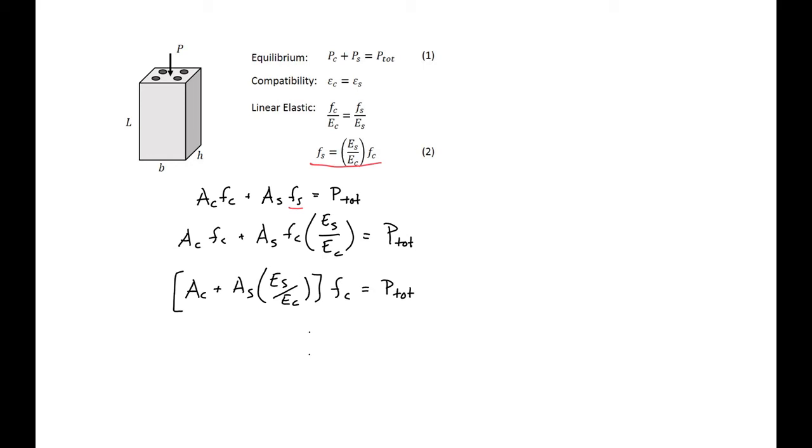Then we'll substitute in - we'll define N as ES over EC, so this is our modular ratio. So we'll get AC plus AS times N times FC equals P total, and this value here is our transformed area.